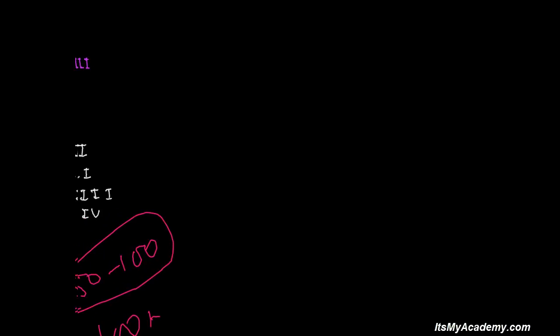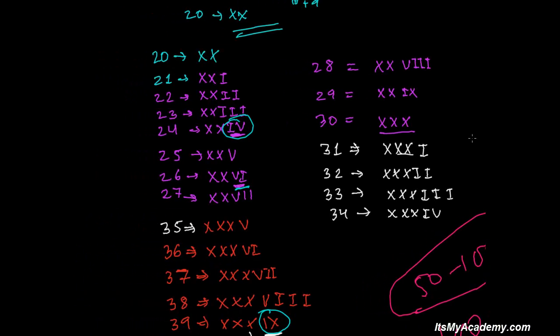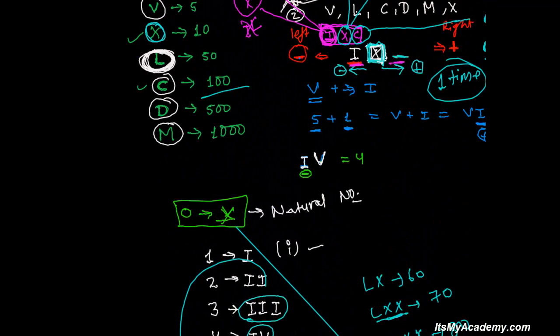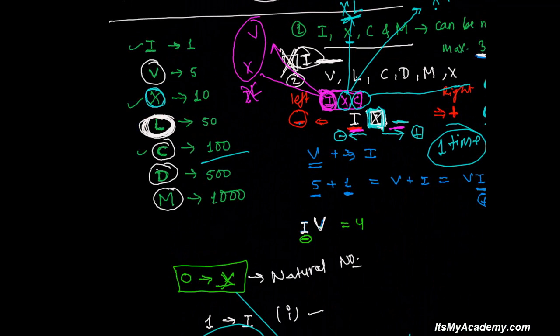In previous videos we learned writing in Roman numerals till 100, and now in this video we are going to learn writing Roman numerals from 100 to 500. You already know what is the meaning of I, what is the meaning of V — these are all things we have already discussed here in a very well manner.